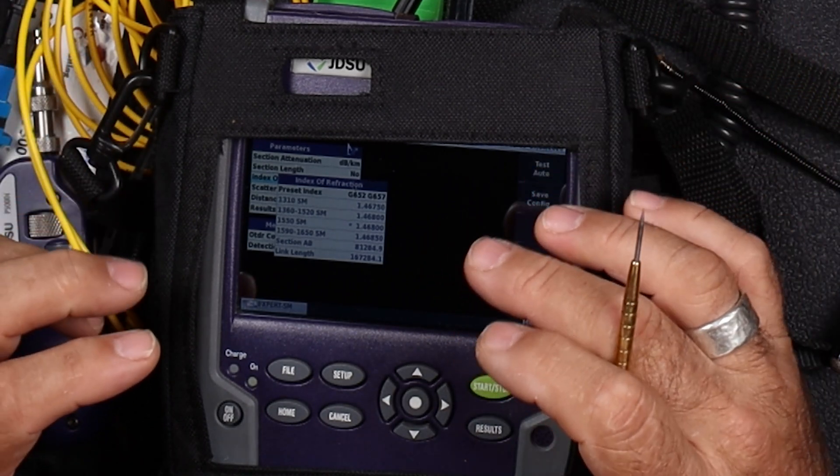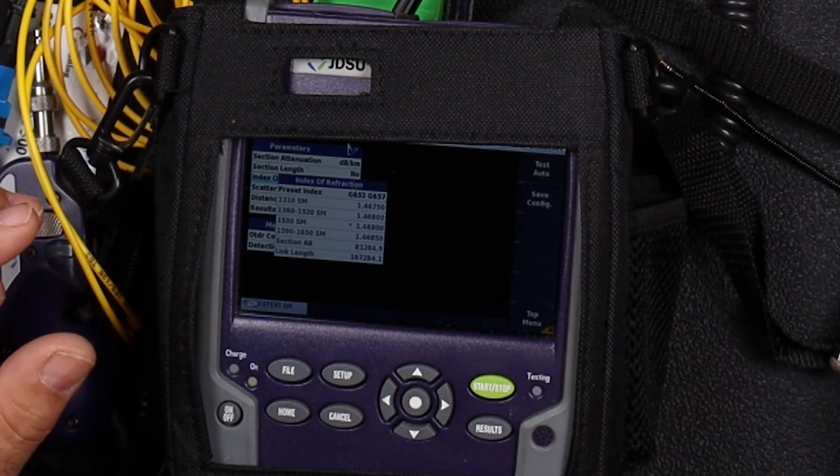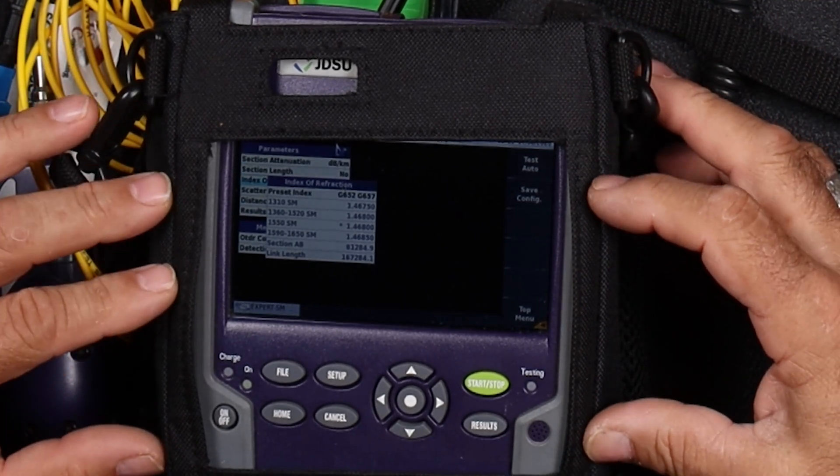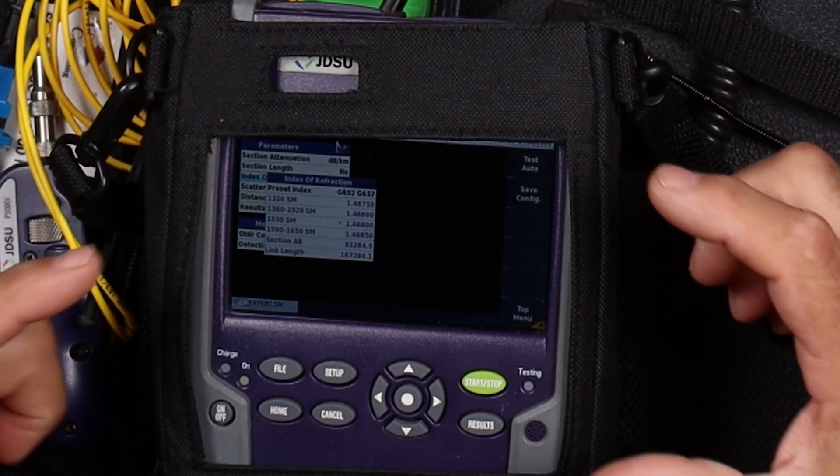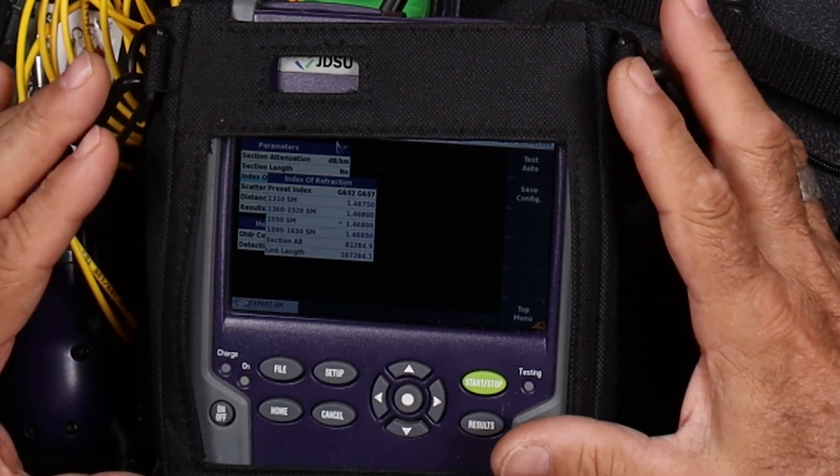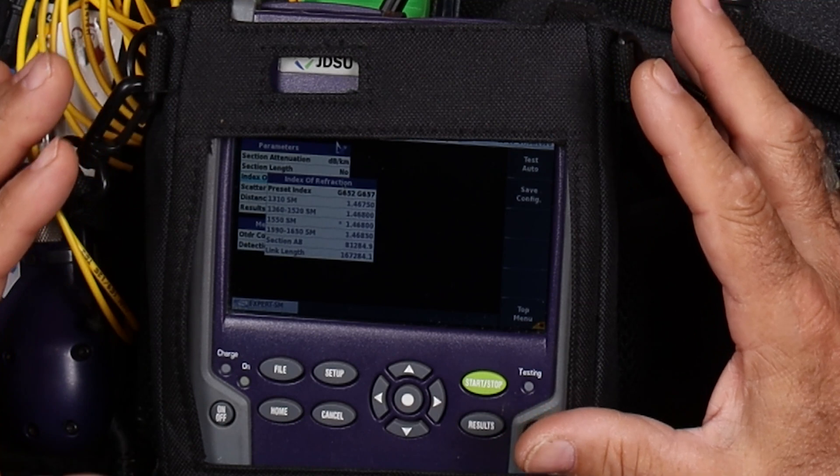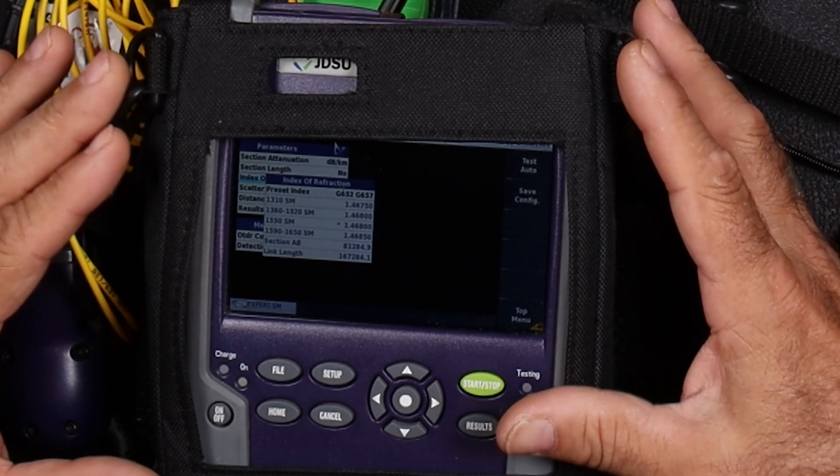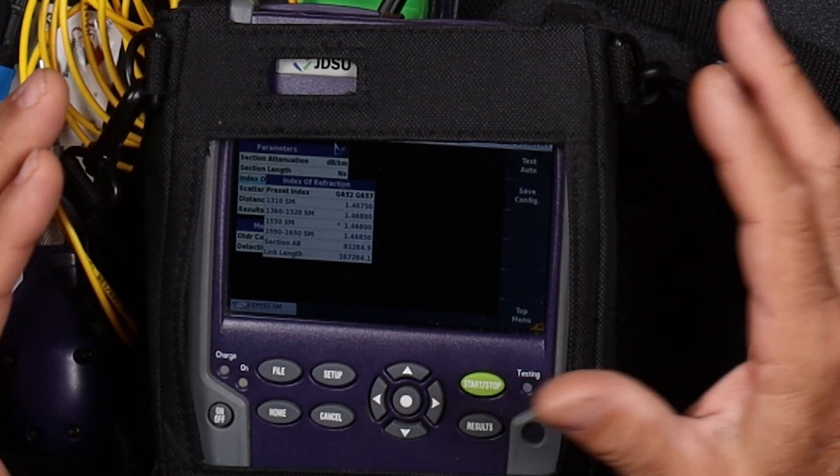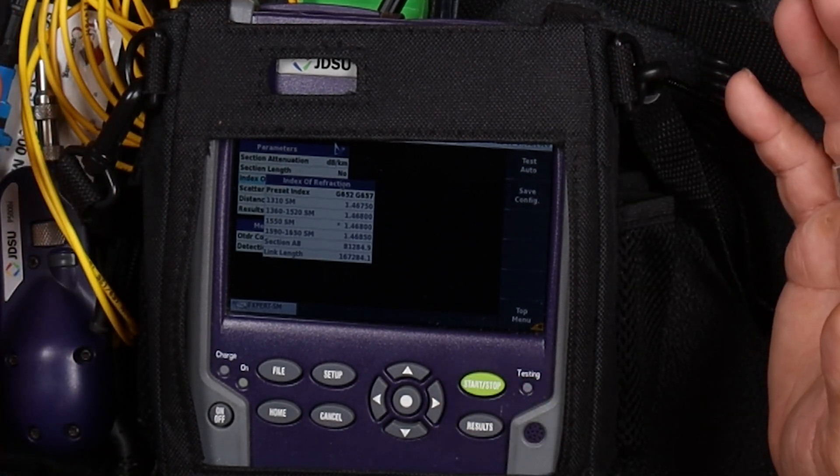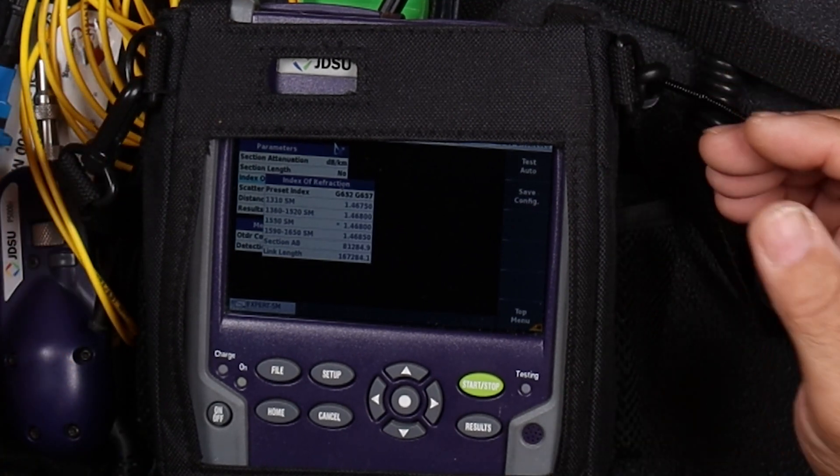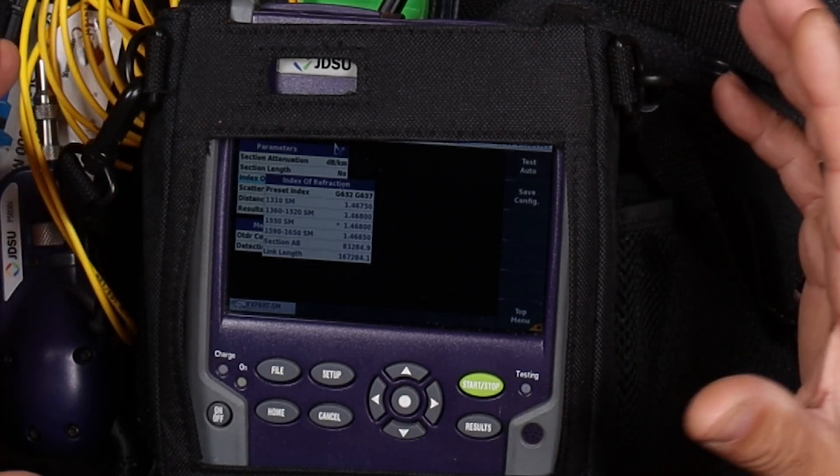Understanding that, that becomes part of the time domain. When we talk about an OTDR, an optical time domain reflectometer, the OTDR works in what is called the time domain. It's a lot like driving your car. If you get in your car and you say, I'm going to go 30 miles an hour and drive for one hour, you can calculate out that you would go 30 miles. If you said I'm going to drive 60 and drove for an hour, you could calculate that you did 60 miles.